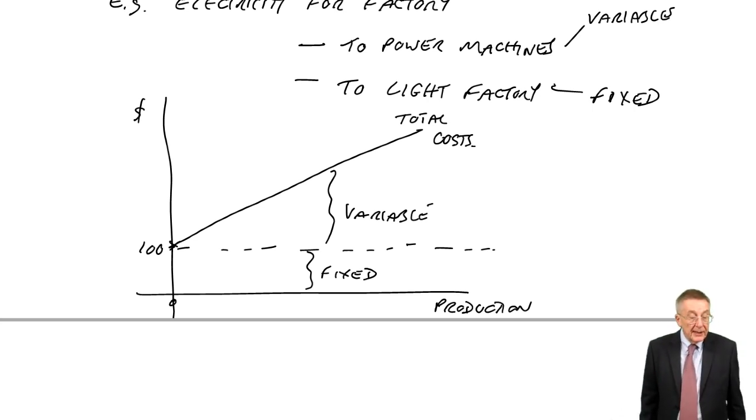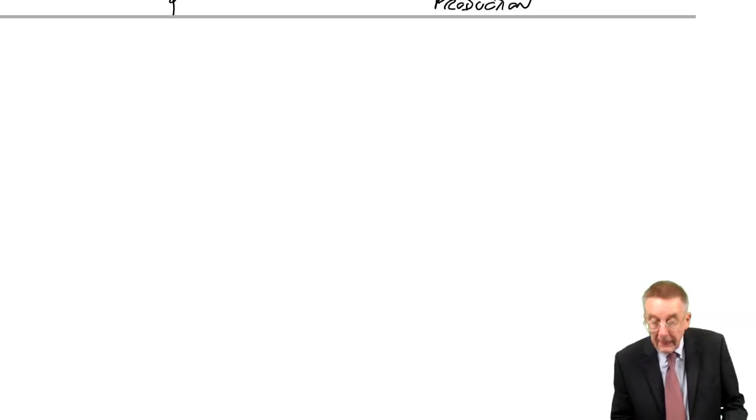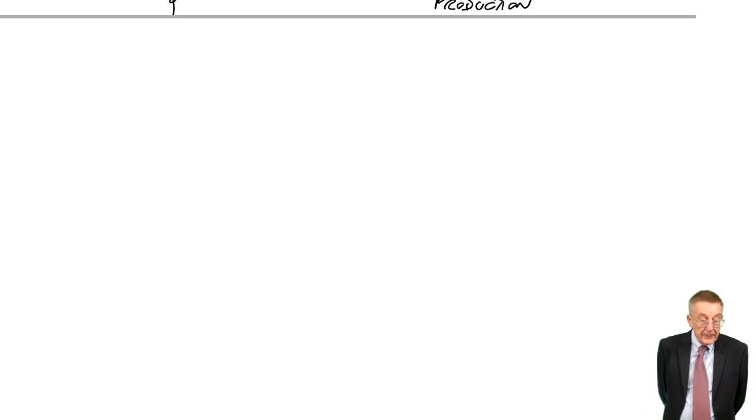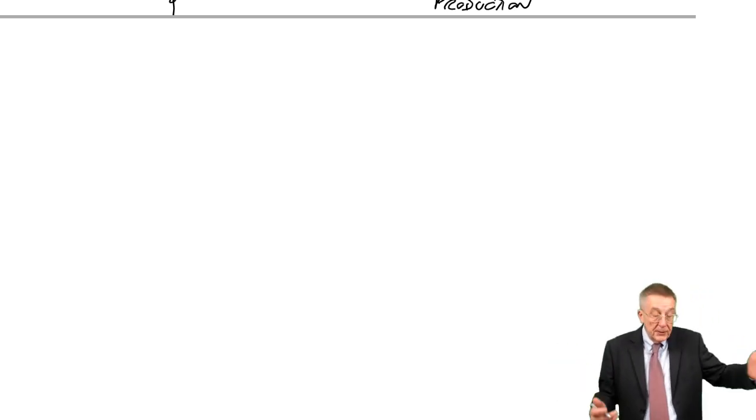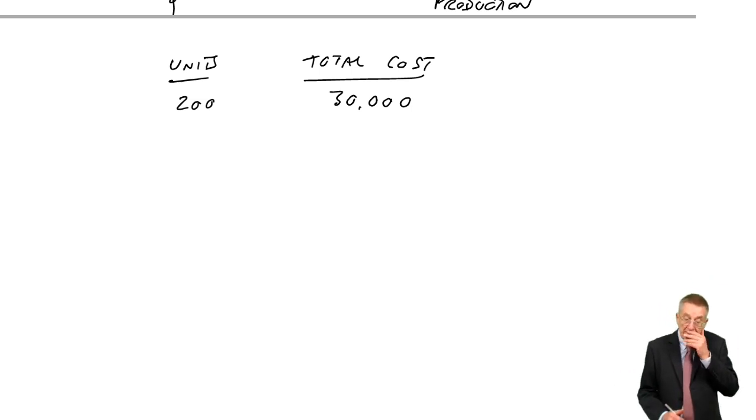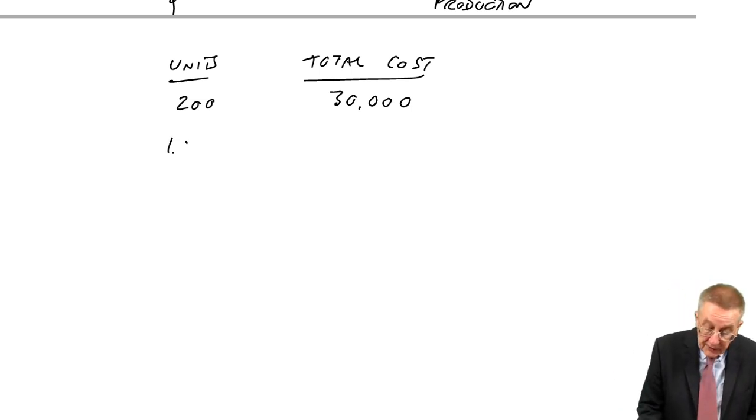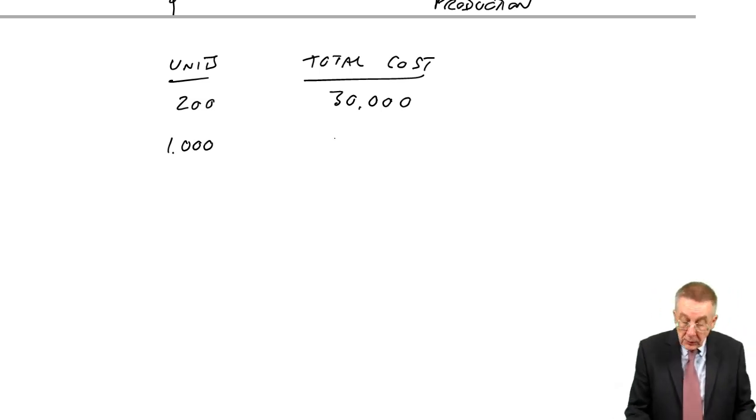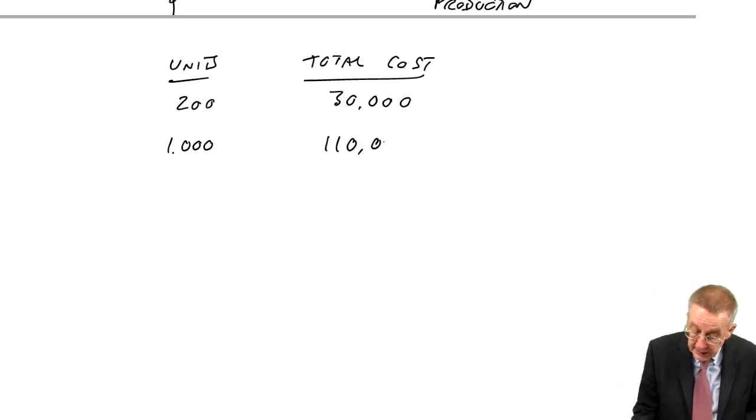Almost finally, a nice little simple exercise on semi-variable. Look at example six with me. At last, a bit of numbers. The total costs of a business for differing levels of output are as follows. Maybe we've looked at two months. One month we produced 200 units and the total cost was 30,000. Another month we produced 1,000 units. And as you'd expect, the total cost was higher at 110,000.